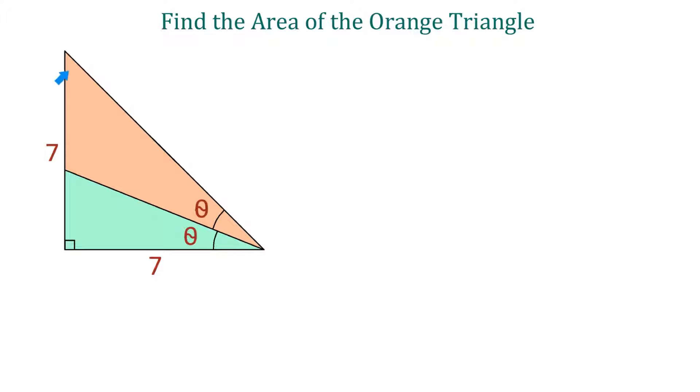Hello, in this figure we have an isosceles right triangle with two sides each of seven units.